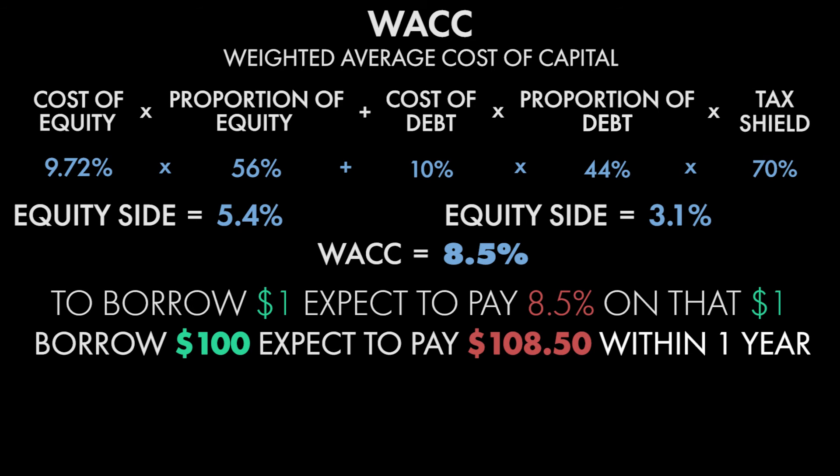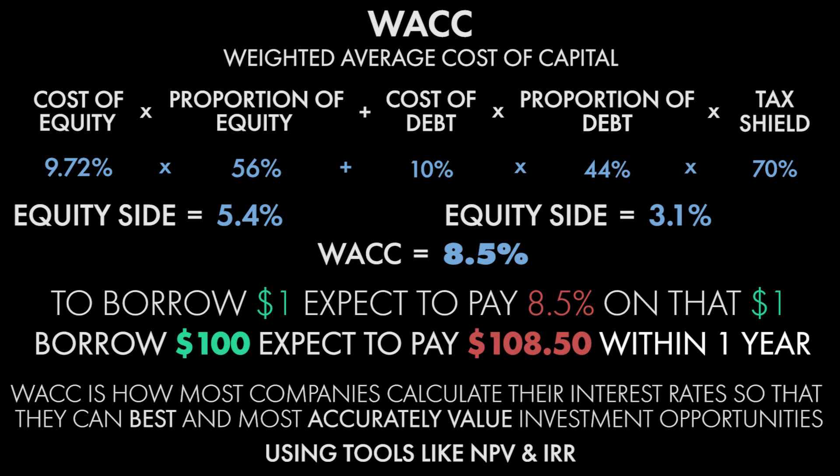For our work, we're going to use this number as a discount rate. Remember how I talked about using discount rates with NPV and IRR — sometimes they're made up, sometimes given to us by our bosses, sometimes we have to calculate them ourselves? WACC is how a lot of companies calculate their discount rates so they can most accurately value investment opportunities using NPV, IRR, and tools like that.